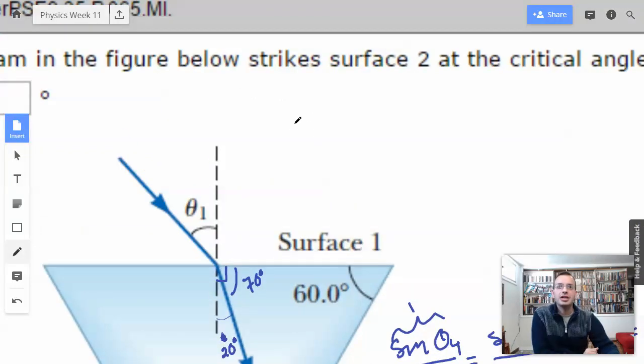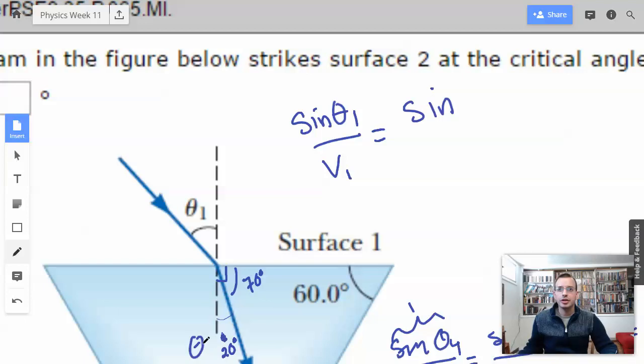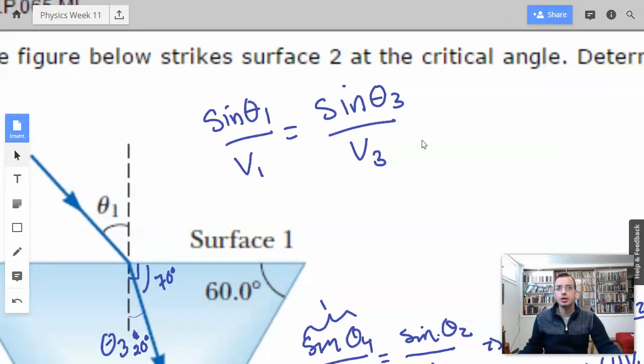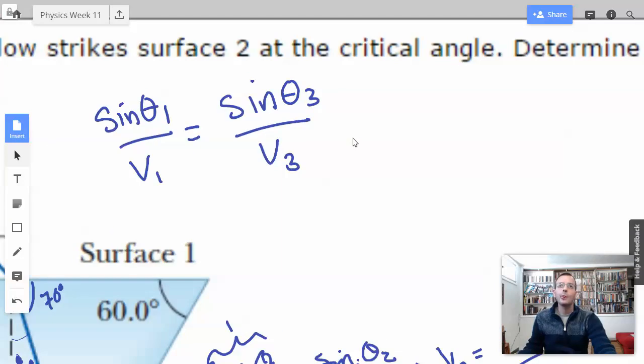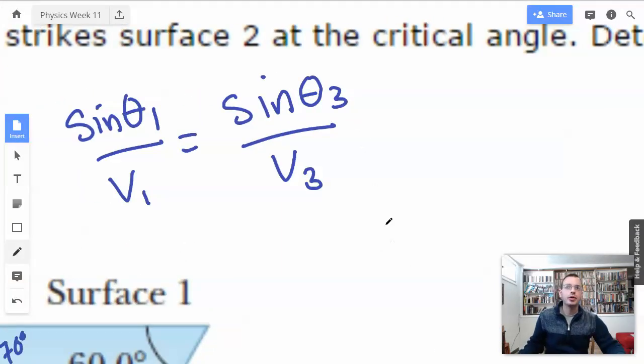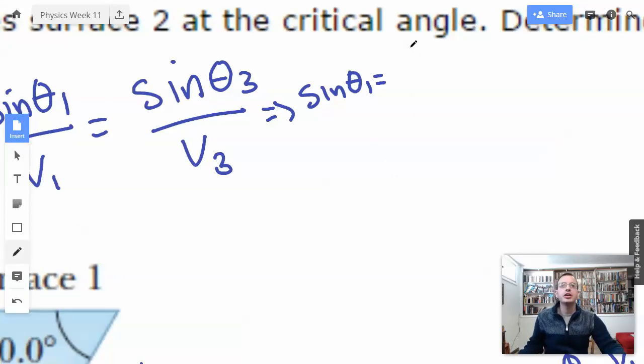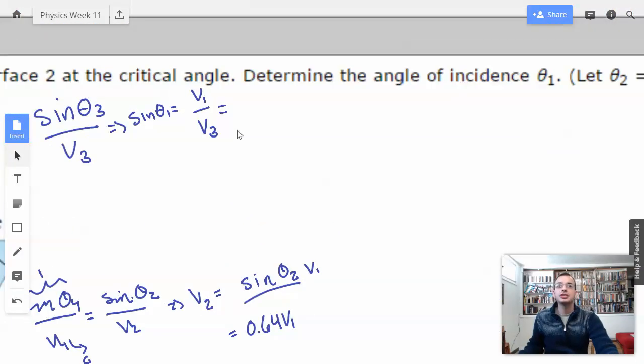So now we're going to go back up here, do another Snell's Law. Sine of theta 1 over V1 equals sine of, I'm going to call this guy theta 3, over V3, where V3 is the same as V2. So from here, you want to find, I'm going to solve for theta 1. By solve, I mean I'm going to leave it as sine of theta 1. I don't like writing arcsines. So V1 over V3, which equals, V3 is 0.64 V1, times sine of theta 3.